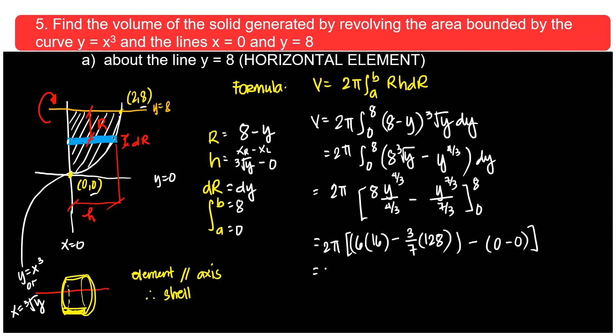Okay. So 2π, this is 96 minus 384 over 7. What's this? Can you please calculate for me? 96 minus 384 over 7 multiplied by 2π. 576π cubic units. This is the volume.